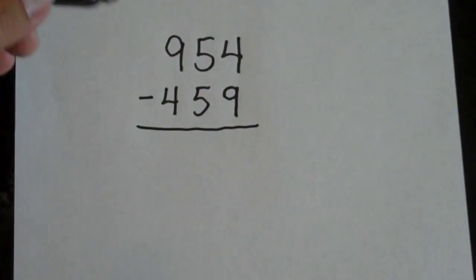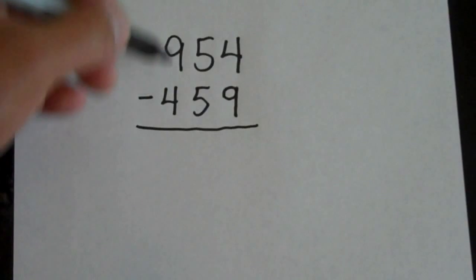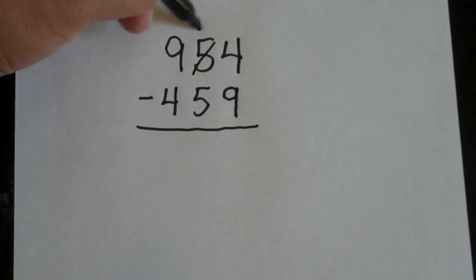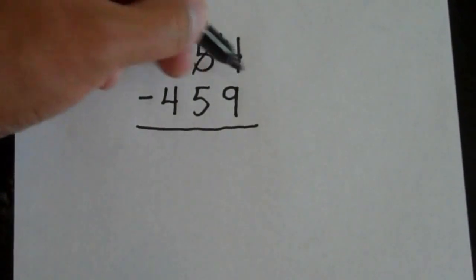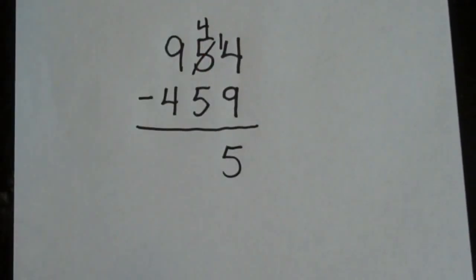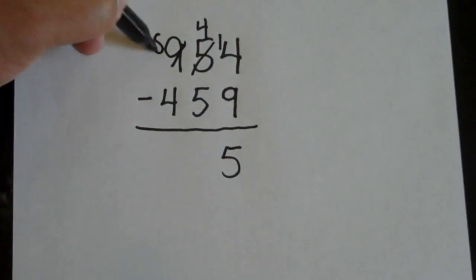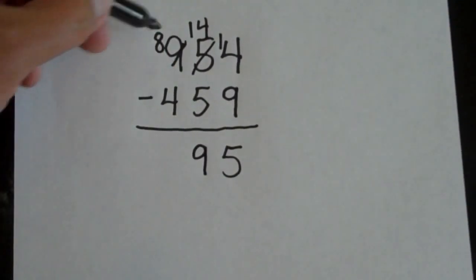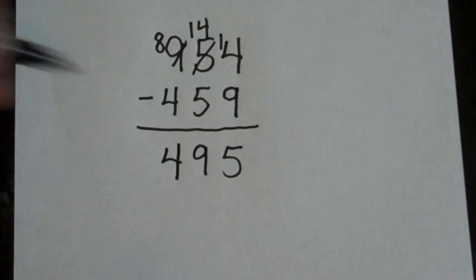So we're going to subtract the jumbled up numbers from the original number. So here we go. We have to borrow. 14 minus 9 is 5. We have to borrow again. 14 minus 5 is 9 and 8 minus 4 is 4. So their new number now is 495.